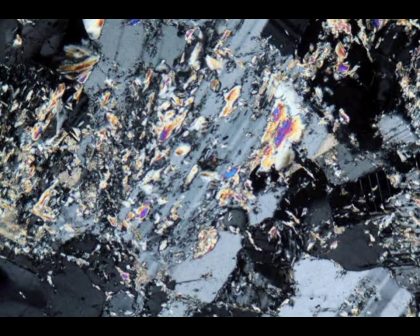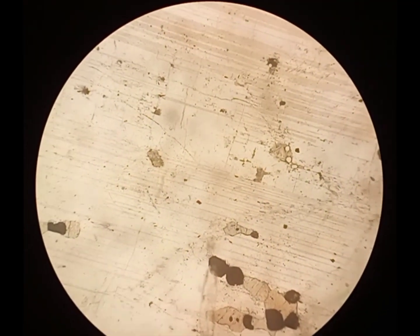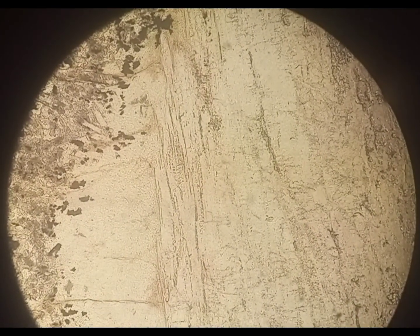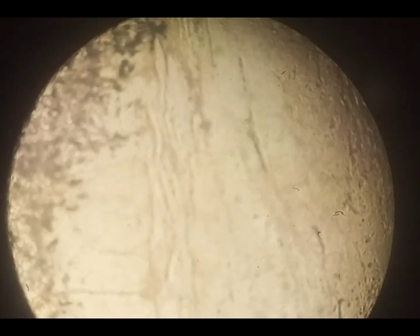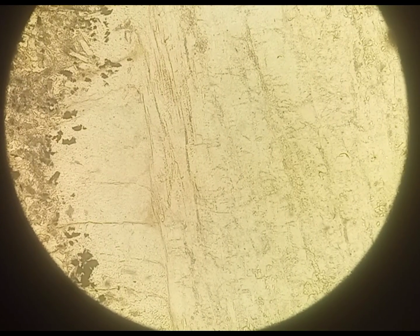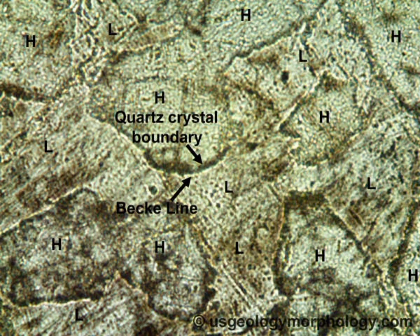This alteration is known as sericitization of feldspar. As you can see in this thin section in plain polarized light, feldspar often appears cloudy or brownish in color, while quartz appears clear. The Becke line method can also be used to differentiate untwinned feldspar from quartz — the Becke line moves toward the material with the higher refractive index. Since feldspar has a higher refractive index than the mounting medium, the Becke line moves into the feldspar.